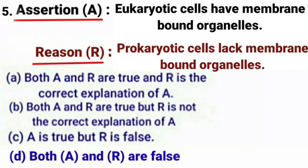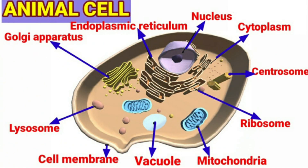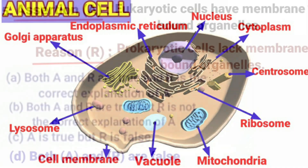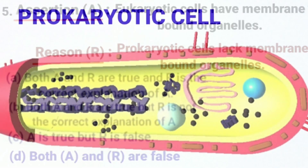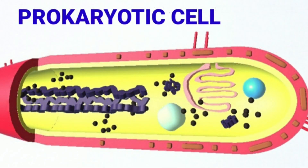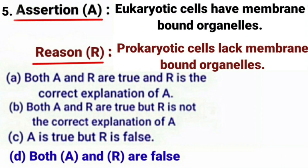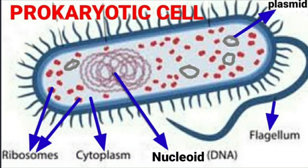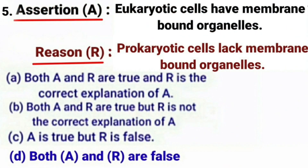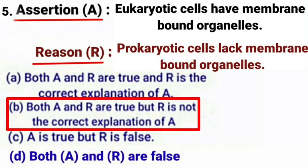Next question. Assertion: Eukaryotic cells have membrane-bound organelles. Reason: Prokaryotic cells lack membrane-bound organelles. Eukaryotic cells have membrane-bound distinct structures called organelles — like nucleus, endoplasmic reticulum, Golgi bodies, lysosomes, mitochondria, vacuoles, etc. — found in all plants, animals, and fungi. Prokaryotic cells lack such membrane-bound organelles and occur in bacteria, blue-green algae, mycoplasma, etc. The nuclear region in these organisms contains only nucleic acids, and such an undefined nuclear region is called a nucleoid. In this question, both assertion and reason are true, but the reason is not the correct explanation of assertion. So option B is the correct answer.